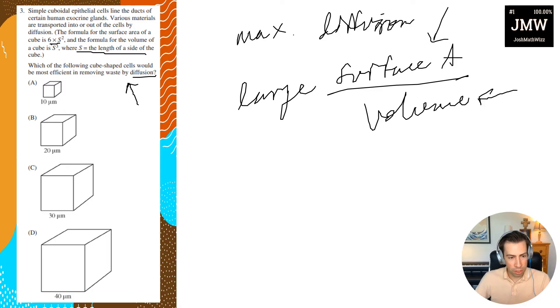They give us that the formula for the surface area of a cube is 6 times s squared. Now I know that the volume of a cube is going to be length times width times height, and because it's a cube, it's just going to be the side length cubed.